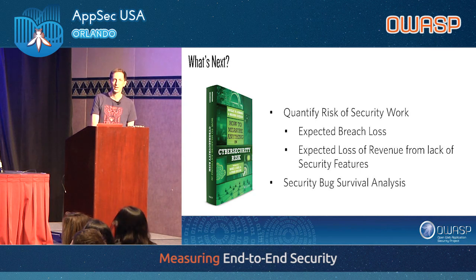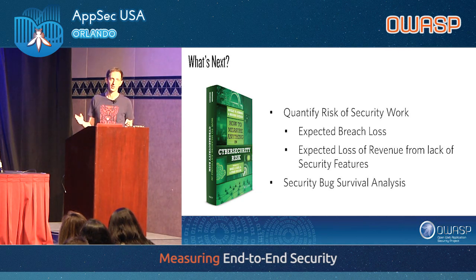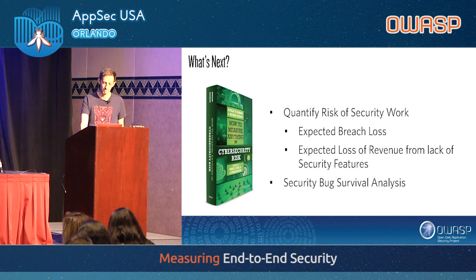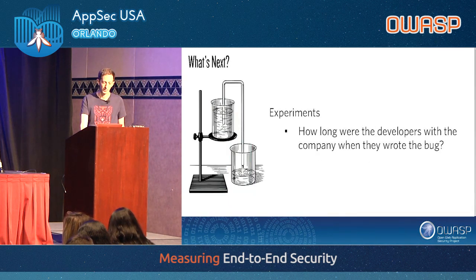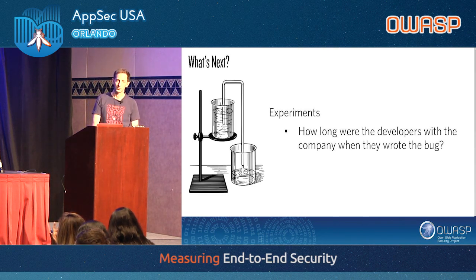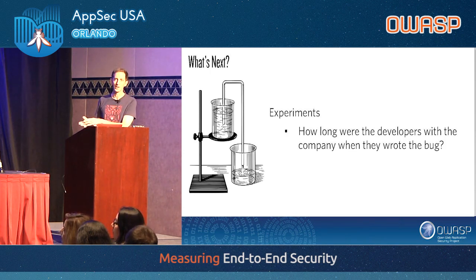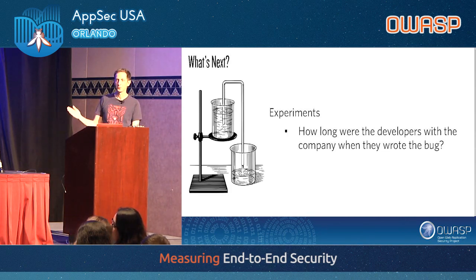We can also do security bug survival analysis. We have our bug lifetimes and are they getting shorter? Based on the features we're producing and how long bugs are actually surviving, combined with our beta analysis of how many bugs are probably out there right now that we don't know about, we can map out how long those bugs are probably going to survive. We're also adding experiments to the bug postmortem — like how long had the developer been with the company when they wrote the bug? If they'd been there less than six months, by six months they'd figured out how to do things securely. We could then shift our focus to reviewing code by new members of the engineering organization.